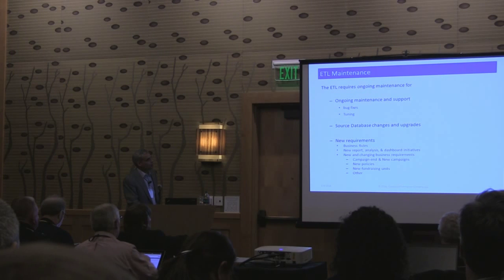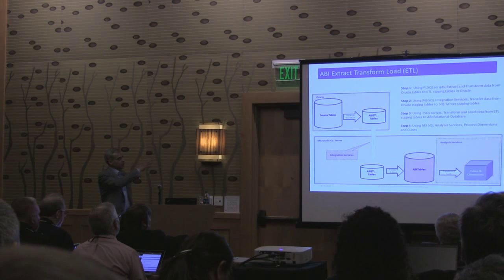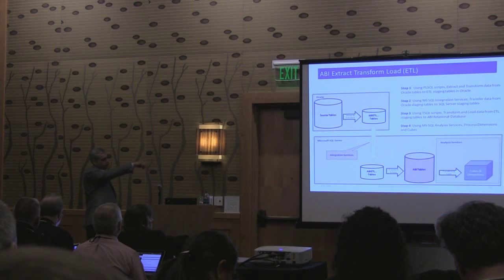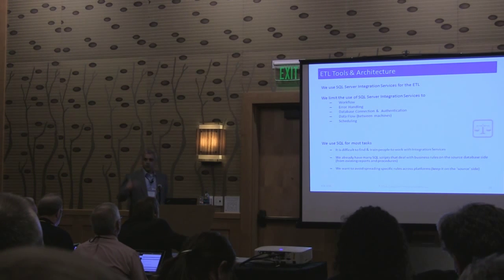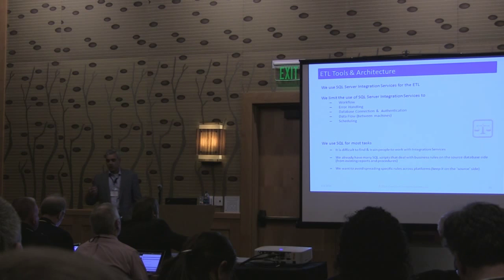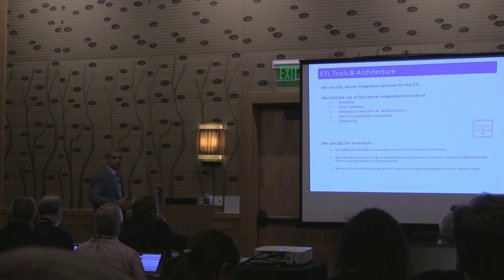This is a general diagram of the ETL — sucking data out of the source tables, putting them in the staging tables, moving them to SQL Server, transforming them, further loading them into our actual tables. Then the stuff in the dotted line represents secondary moves, in this case to Analysis Services for multidimensional support. We use Integration Services to manage this. With respect to practical trade-offs, we really limit our use of Integration Services basically to supporting authentication, encrypting passwords and connection information between databases, for scheduling, for workflow, for error handling — but not for SQL and not for transformations.